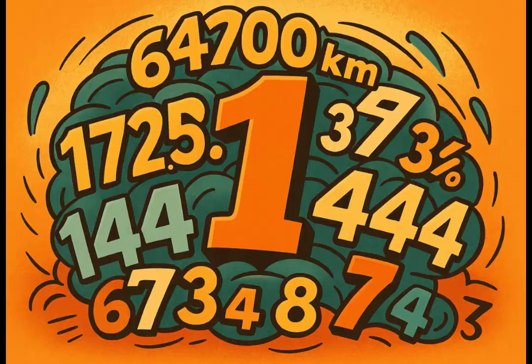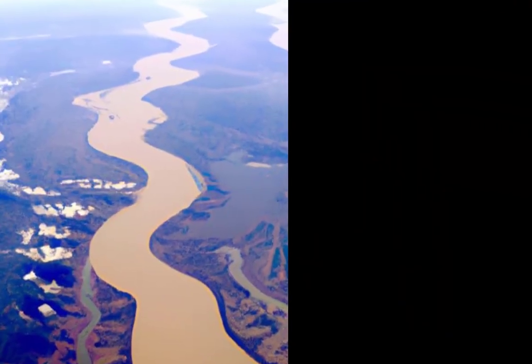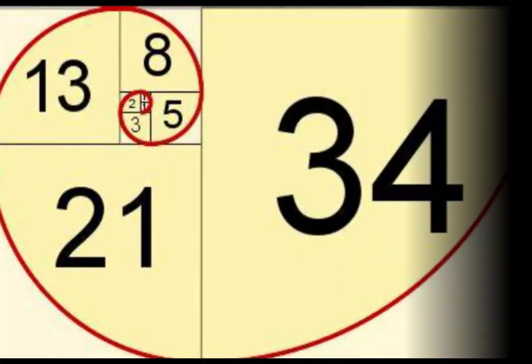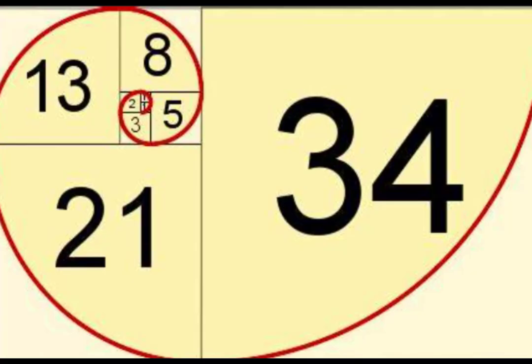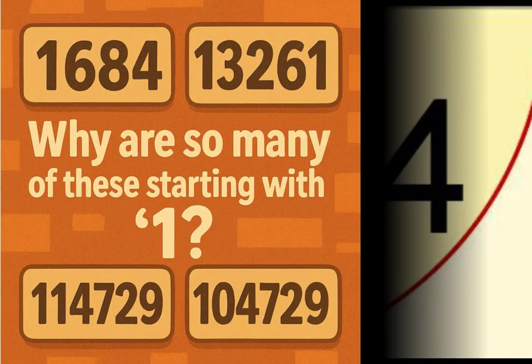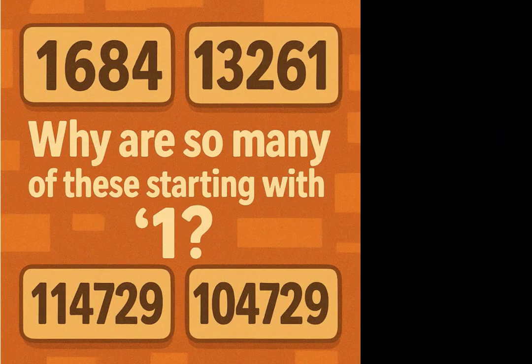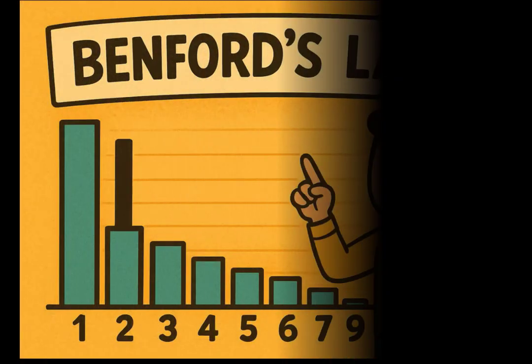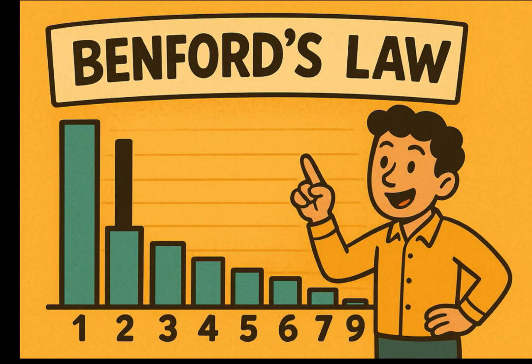Take any pile of real-world numbers — river lengths, stock prices, Fibonacci terms — and you'll spot a weird pattern. Nearly one-third of them start with the digit 1, but fewer than 1 in 20 start with 9. Welcome to Benford's Law.